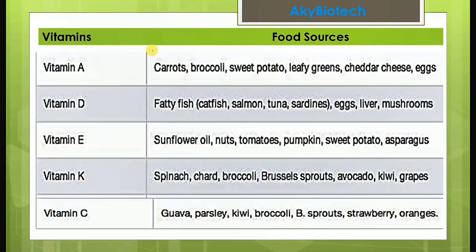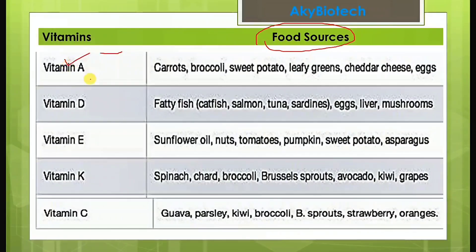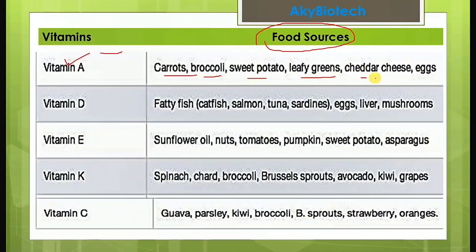Now let's look at food sources for each vitamin. Vitamin A: major food sources are carrots, broccoli, sweet potato, leafy greens, cheddar cheese, and eggs.